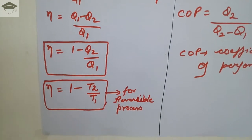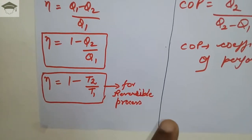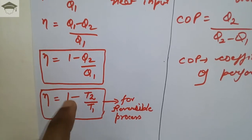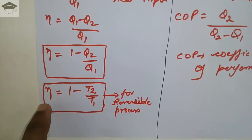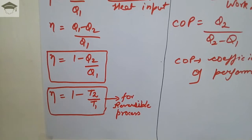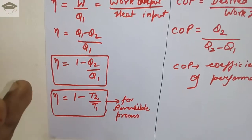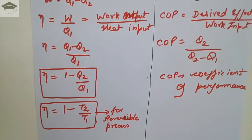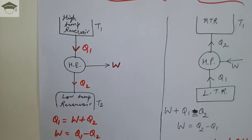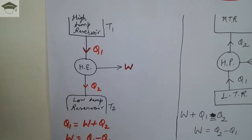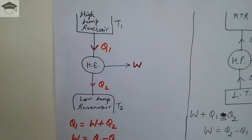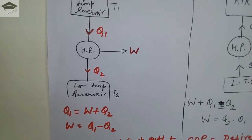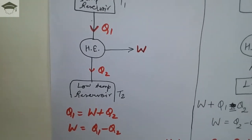Now if the process is reversible, we can replace Q2 by T2 and Q1 by T1, so eta is equal to 1 minus T2 upon T1 for a reversible process. For any irreversible process, eta is equal to 1 minus Q2 upon Q1. So basically, a heat engine is any device which takes heat from a high temperature reservoir at T1, produces a work output, and rejects some part of the heat to a low temperature reservoir at T2.